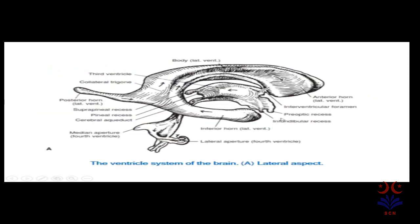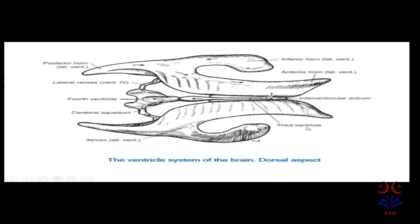Here is another picture showing the ventricular system of the brain. The whole lateral ventricle is visible, with the interventricular foramen between the lateral ventricle and the third ventricle. From the third ventricle, the cerebral aqueduct leads to the cavity of the fourth ventricle. Viewing from the top, we can see the two lateral ventricles, the third ventricle, the fourth ventricle, and the horns — anterior, posterior, and inferior.